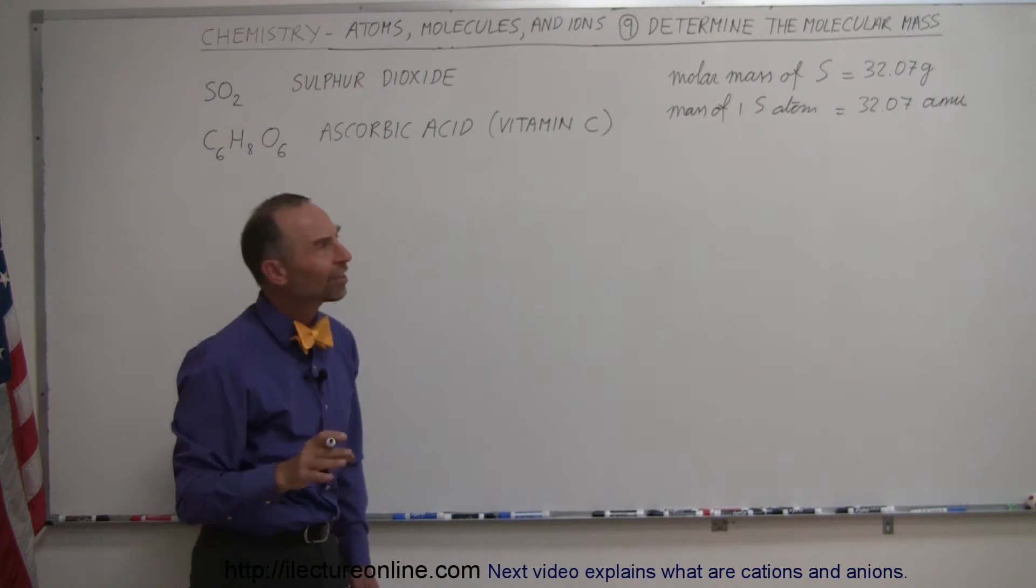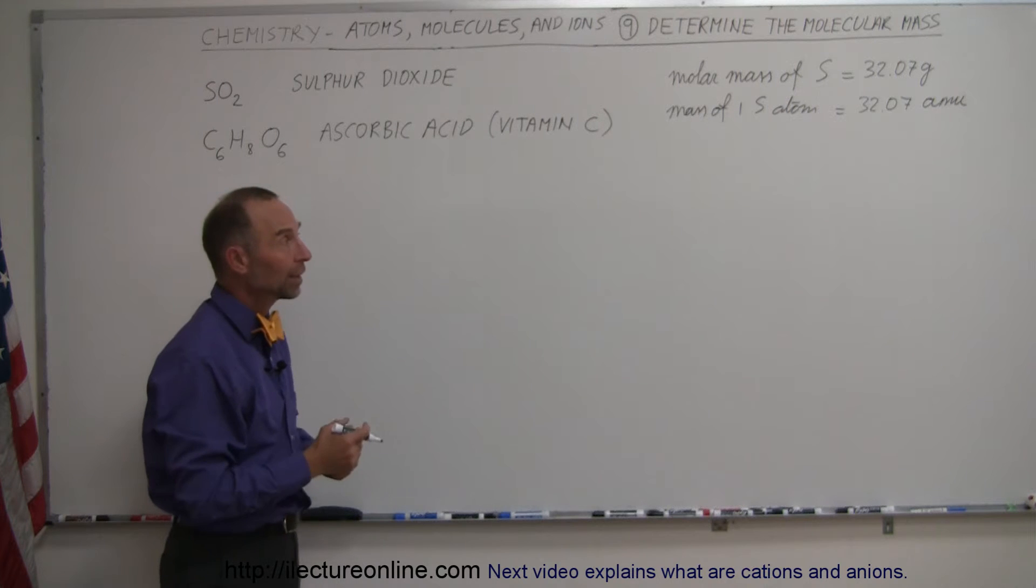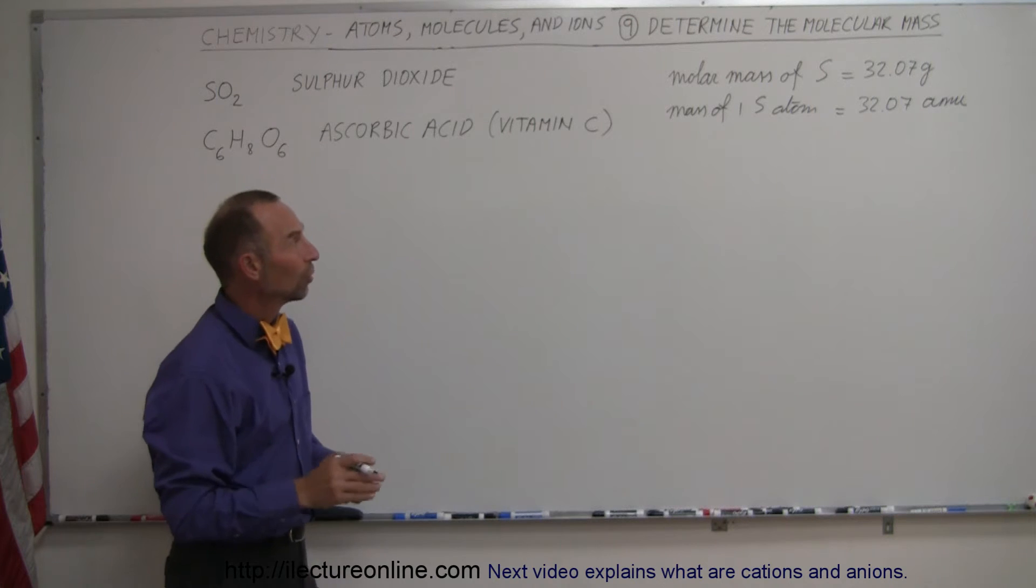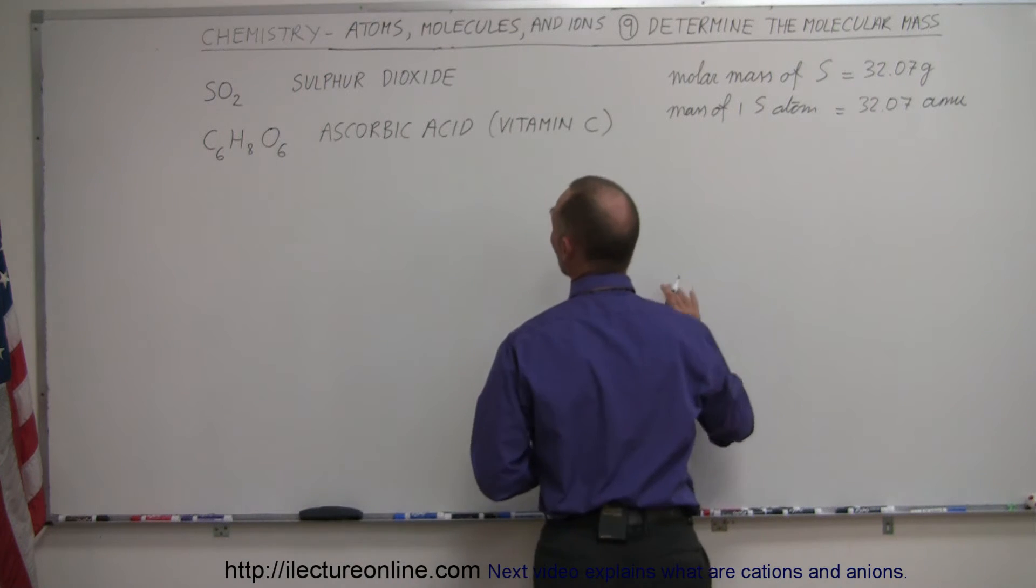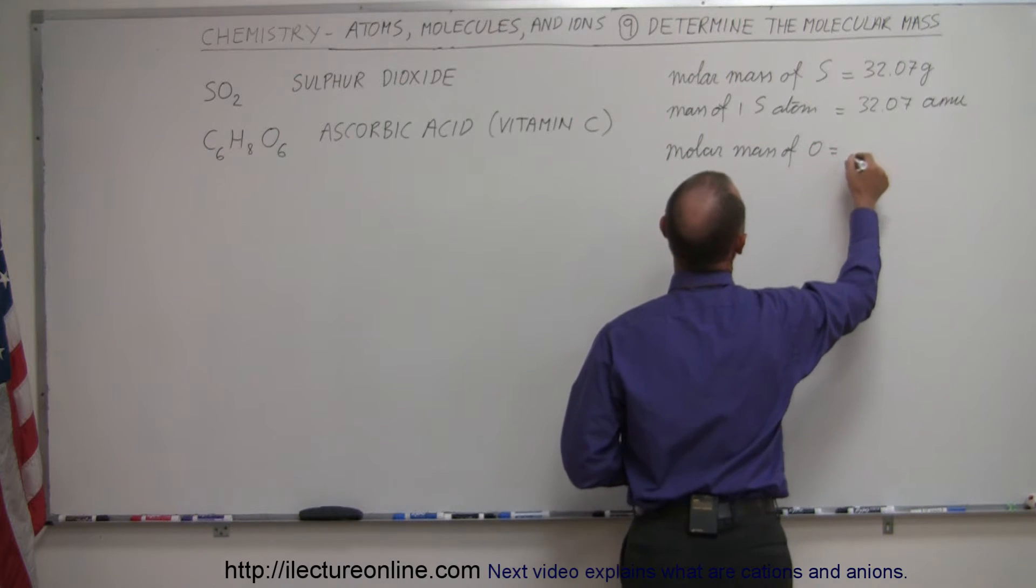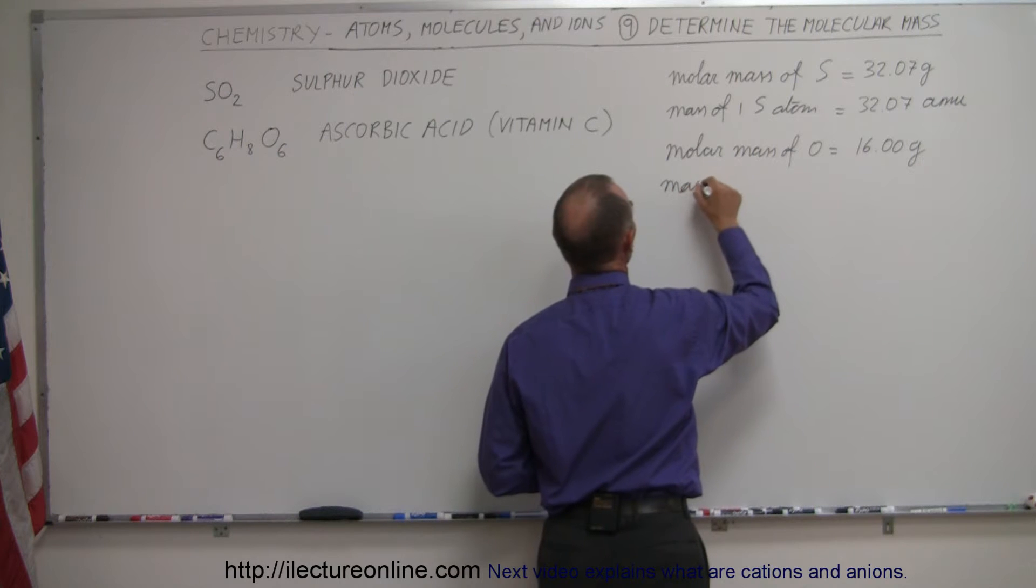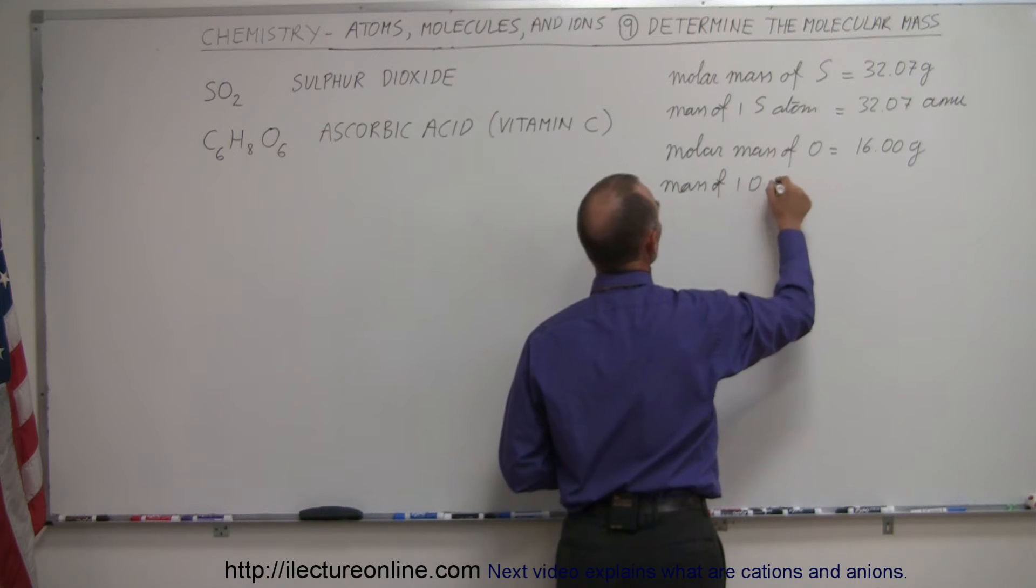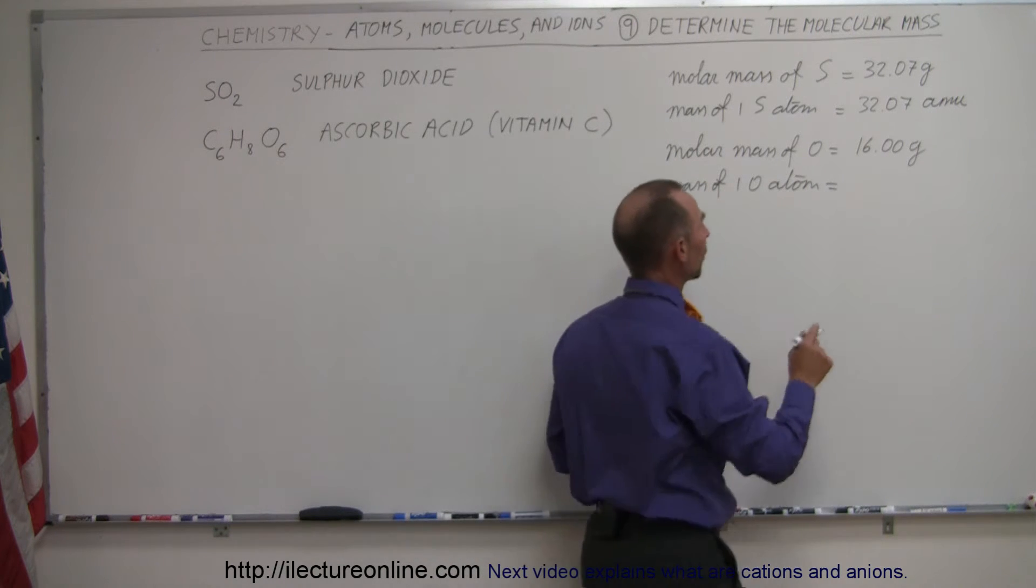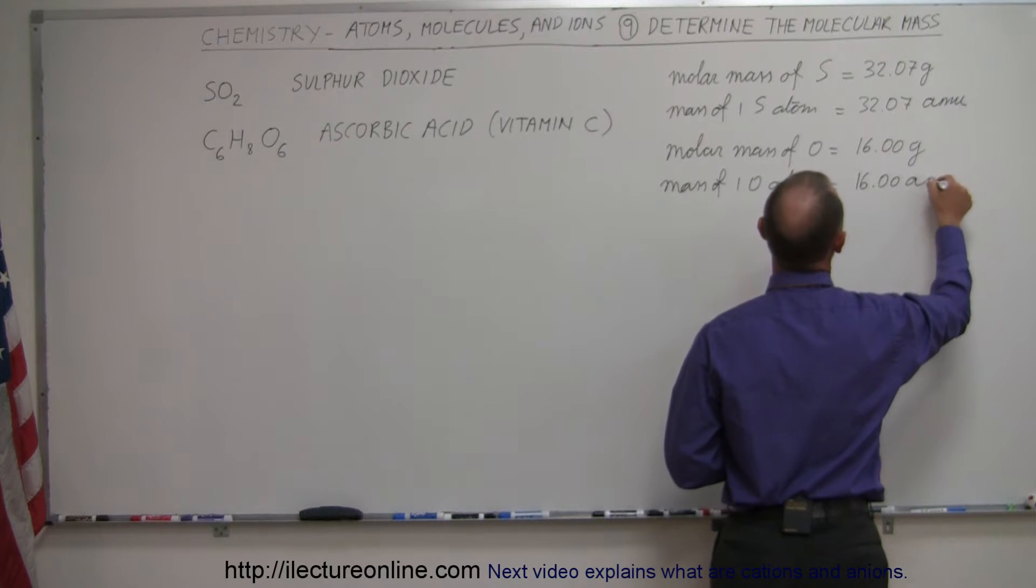And I say on average because there's going to be different isotopes of sulfur, and some will be a little bit more massive, and some will be a little bit less. But on average, it would be 32.07 AMUs. Same thing with oxygen. So we have the molar mass of oxygen, which is equal to 16.00 grams, which means the mass of one oxygen atom, on average again, because there are different isotopes of oxygen, would be 16.00 atomic mass units.